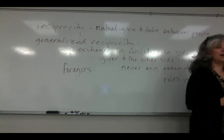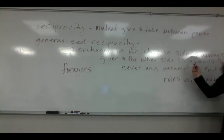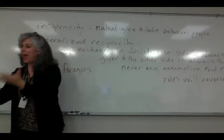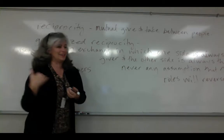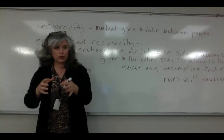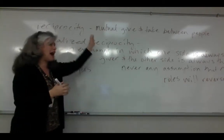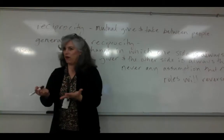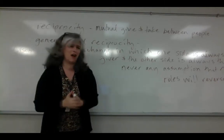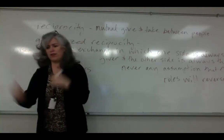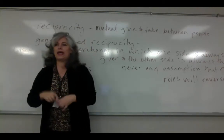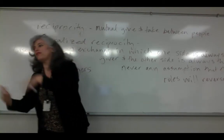Balanced reciprocity is another type of give and take, but unlike generalized reciprocity, it is not one-sided. The expectation in balanced reciprocity is that there is a giver and a taker, but the giver gives with the expectation that whoever received will give back something equivalent — not necessarily identical, but equivalent in time, effort, consideration, or monetary value. It is an equivalent give and take, and the expectation is that the roles will eventually reverse.